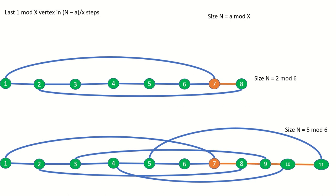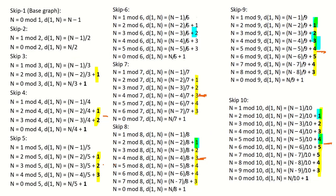We can go right from the last 1 mod x vertex, or we can go left until we can skip forward to the last vertex. When the graph is a high number mod x then for the last few vertices it is quicker to step left and then skip right. On the other hand if the graph is a relatively low number mod x it is quicker to just step right a few times than to take many steps backward and then skip forward. And this is the reason for the pattern of increasing and then decreasing constants.